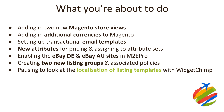We're also going to be pausing to look at the localization of listing templates with WidgetChimp. If you are a premium subscriber of Understanding E, you do get a WidgetChimp subscription included, which includes the responsive listing template builder. We'll show you how to customize that for the different international eBay sites so that the links work — for example, if you're listing onto eBay Australia, the links keep the customer within eBay Australia. And for Germany, you may want to translate the side blocks or the description header.